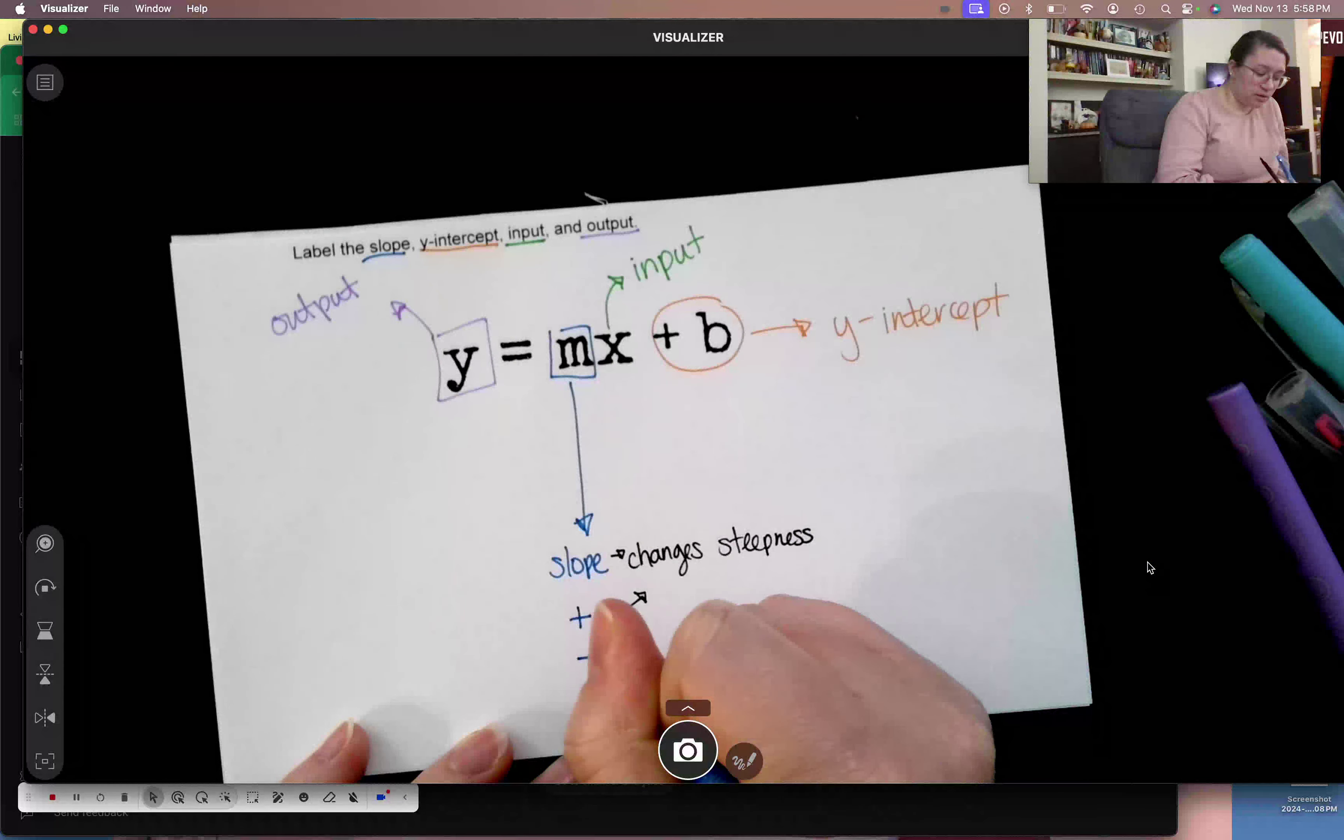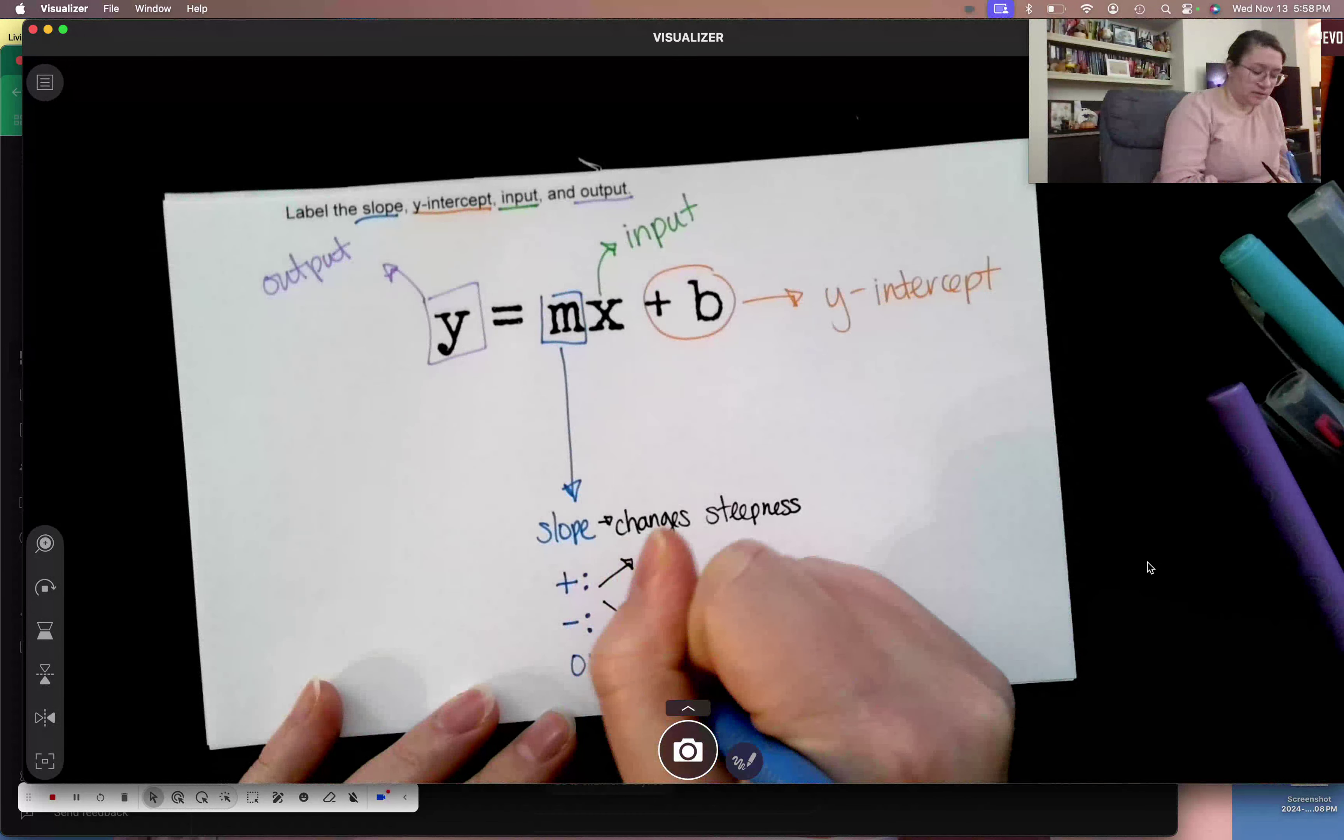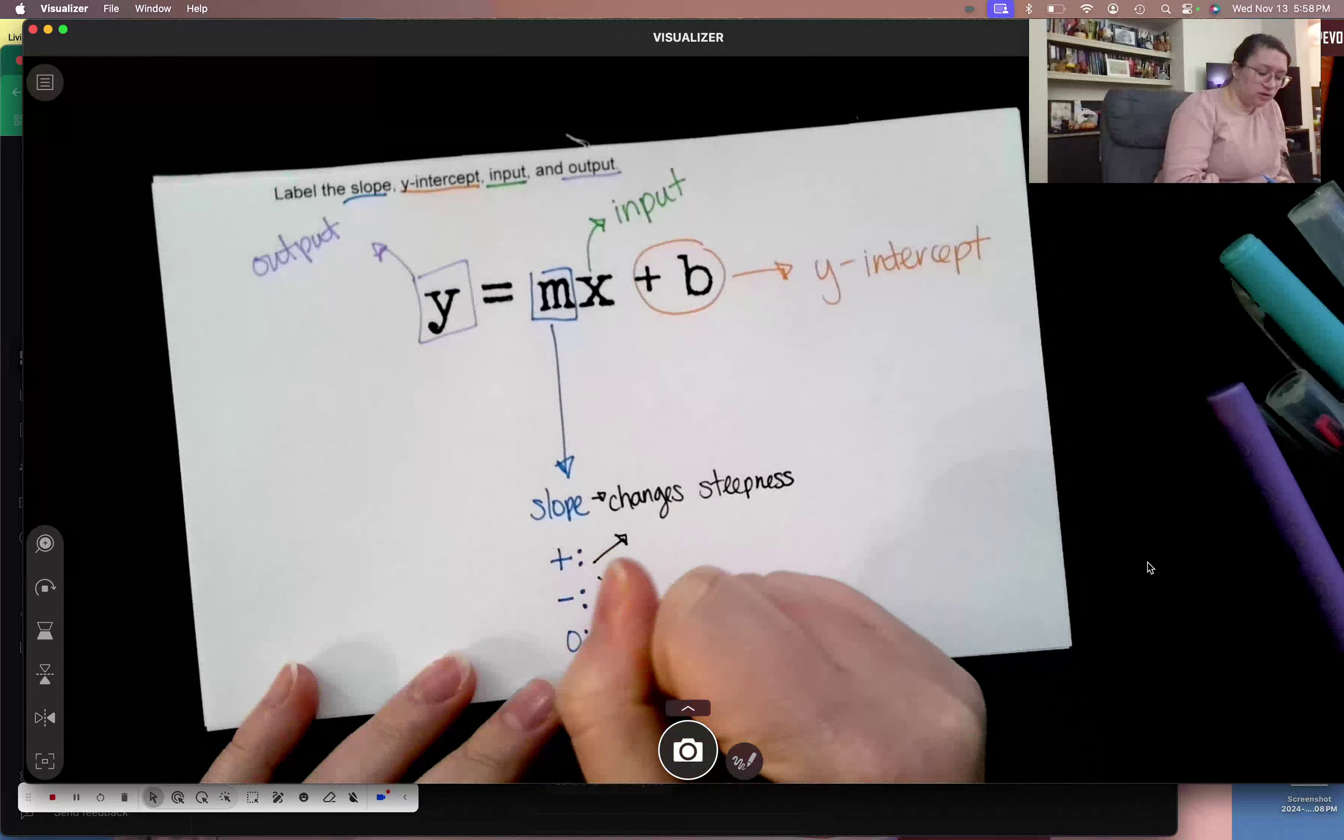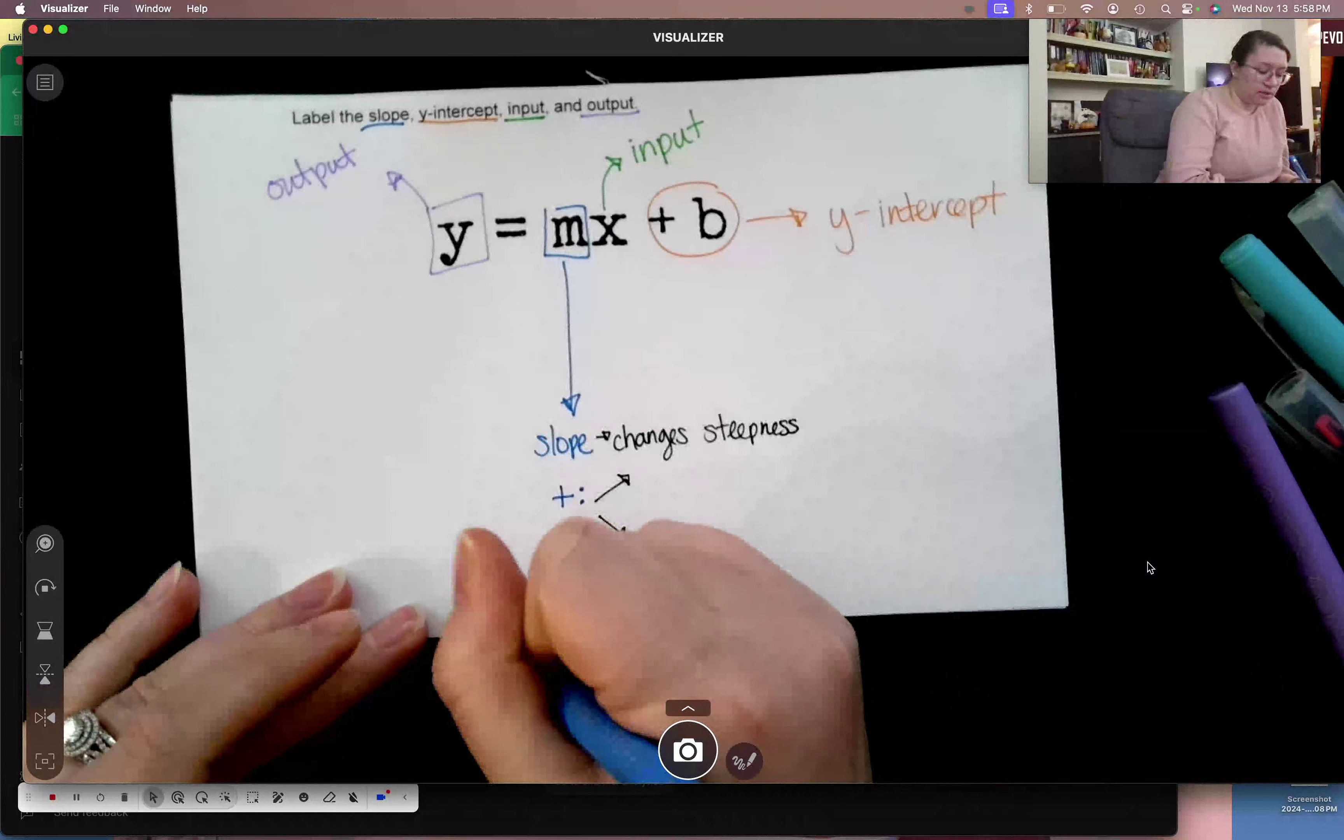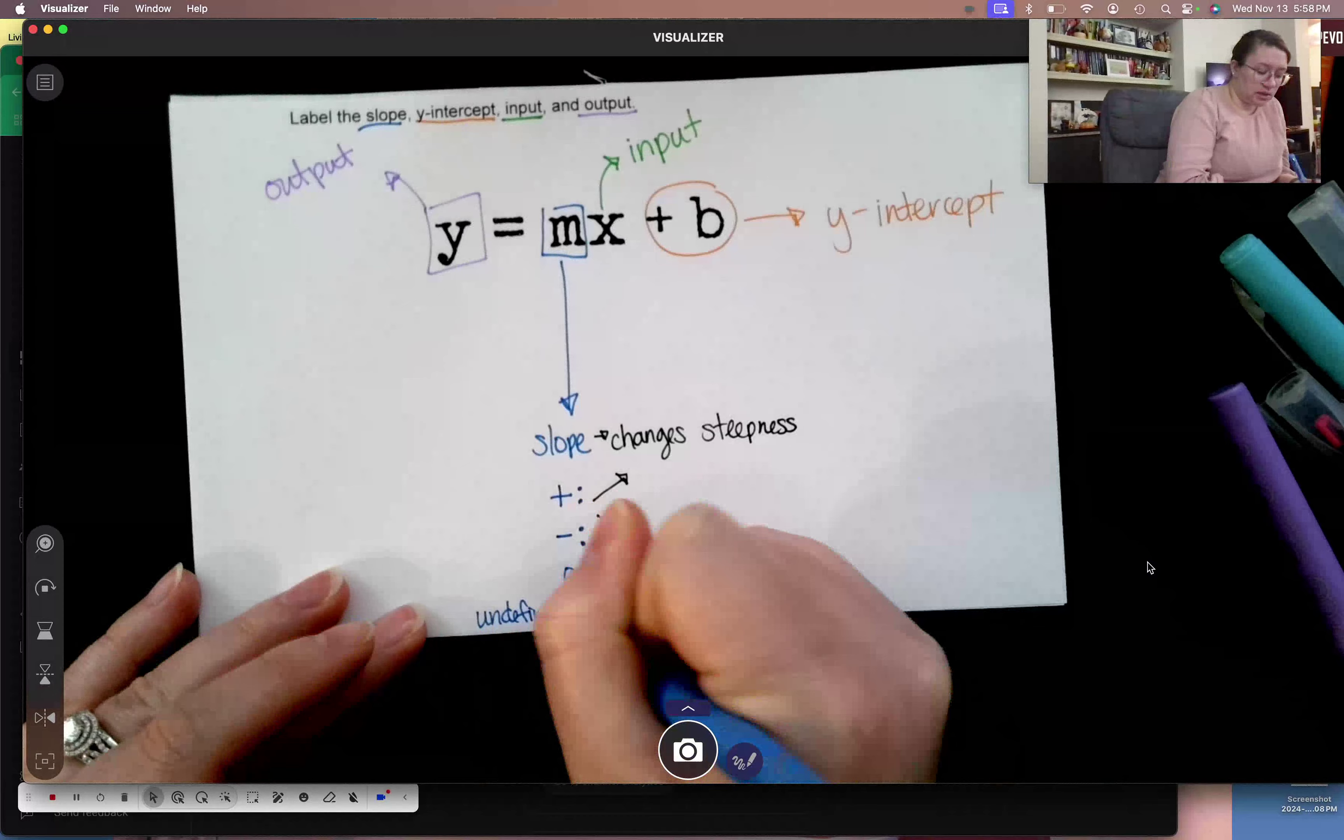What if my slope is zero? What does my line look like? It's just a flat line. I didn't write that one in black. And then what's it called if you have a straight vertical up and down line? That's undefined slope.